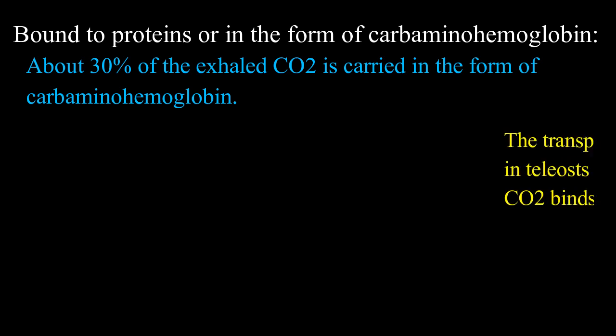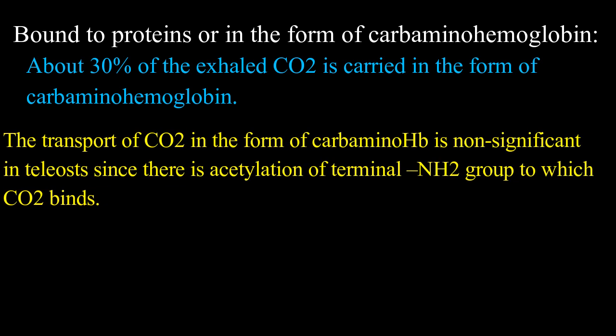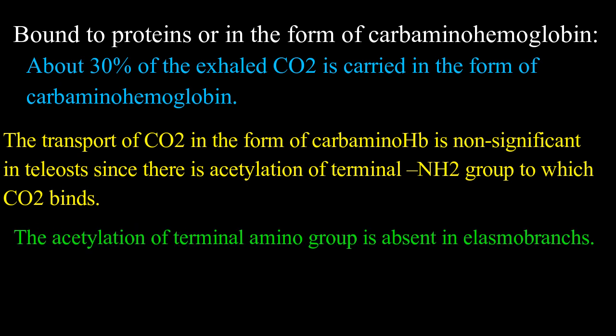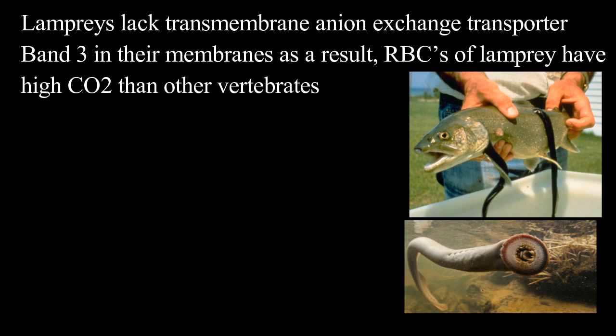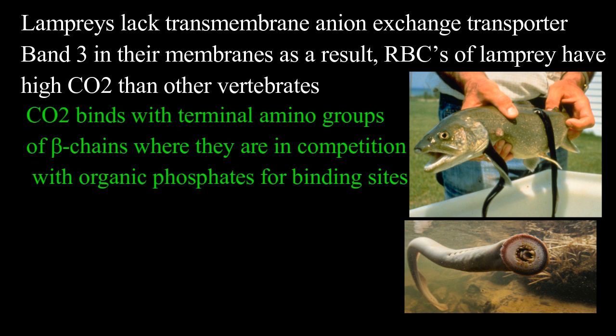The transport of carbon dioxide in the form of carbaminohemoglobin is non-significant in teleosts, since there is acetylation of the terminal amino group to which CO2 binds. The acetylation of the terminal amino group is absent in elasmobranchs and other vertebrates. Lampreys lack the transmembrane anion exchange transporter, that is band 3, in their membranes. As a result, RBCs of lamprey have high carbon dioxide content compared to other vertebrates. The carbon dioxide binds with the terminal amino group of beta chains, where they are in competition with organic phosphates for binding sites.